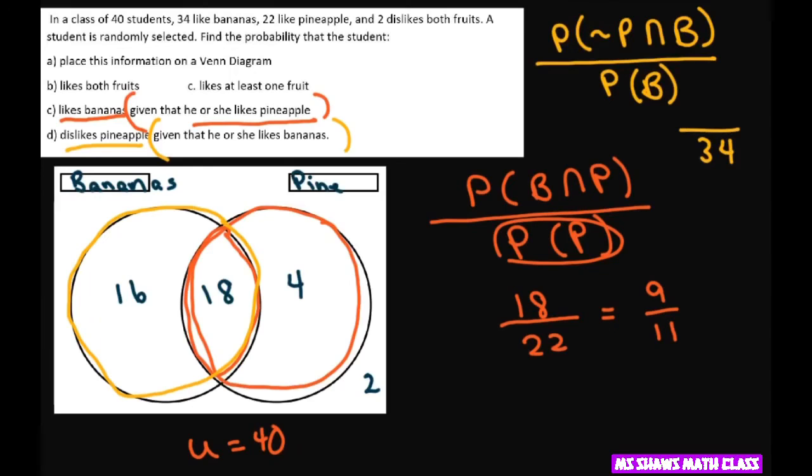And not pineapples and bananas, that's just going to be this part right here. So that's going to be 16 divided by 34, which is 8 divided by 17. So this is 8 divided by 17. And this one was 9 divided by 11. And that's it. Thank you. Have a nice day. Bye.